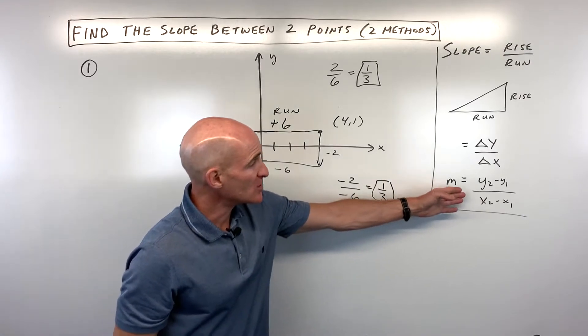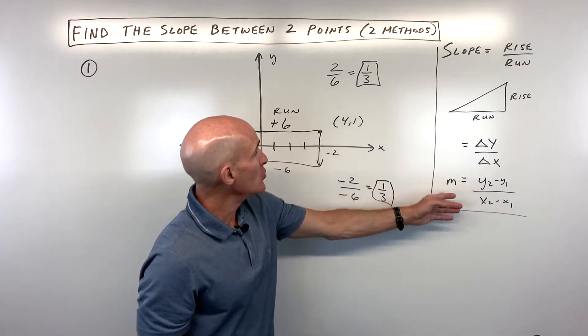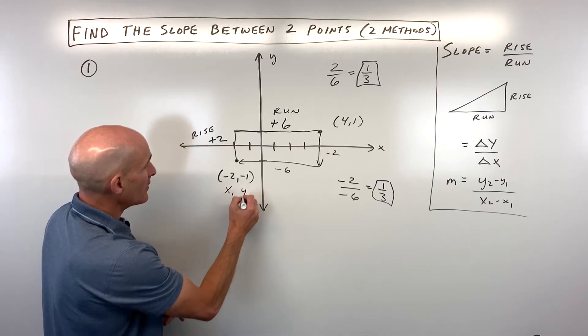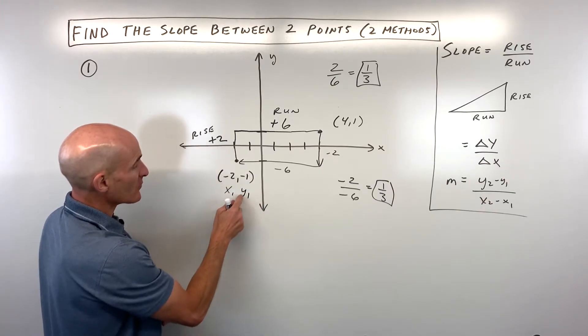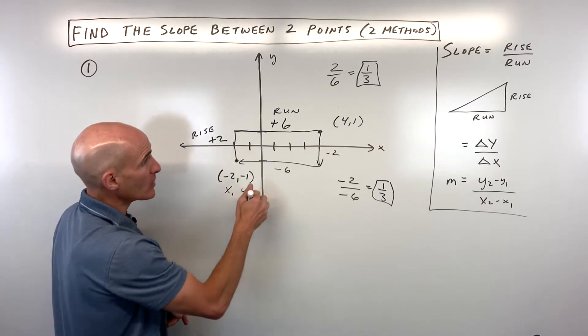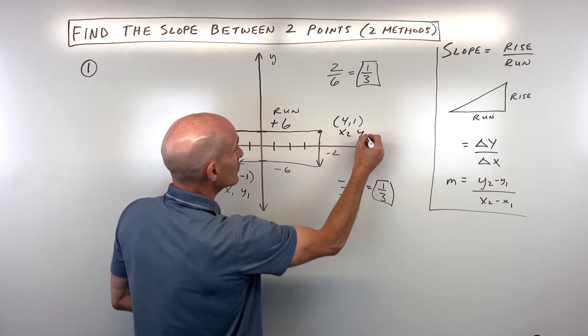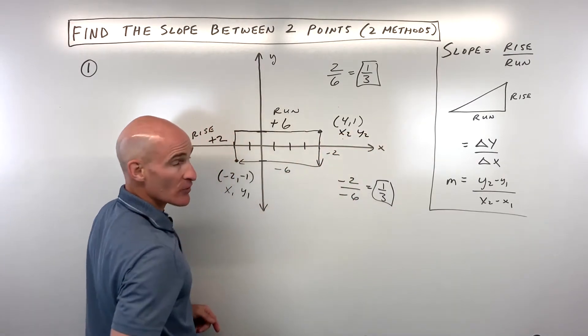Now if you want to use the slope formula here, you can think of these two points as like x1, y1—that one just means for point number one the x coordinate and the y coordinate—and x2, y2. That two just means for point number two.